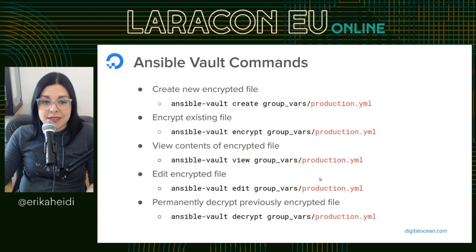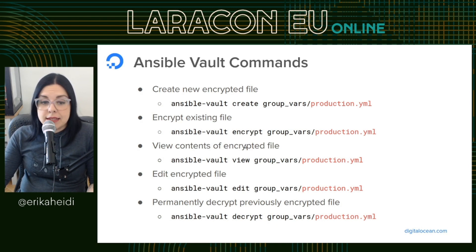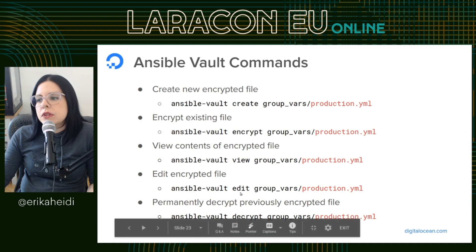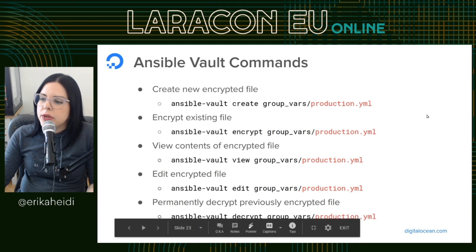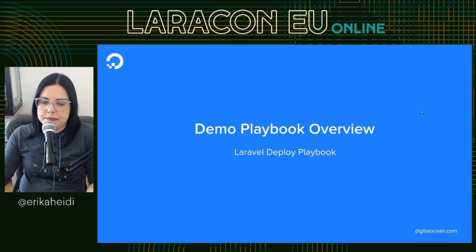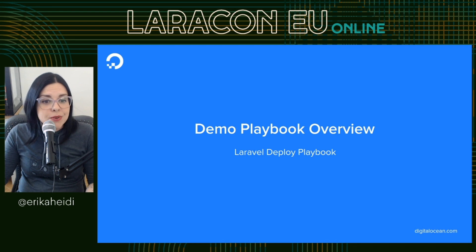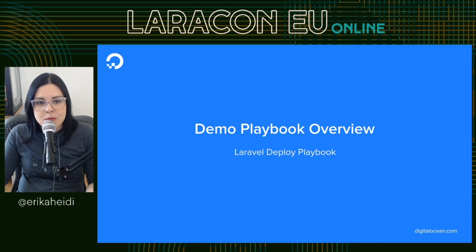The Ansible Vault commands are: `create` for creating a new encrypted file, `encrypt` for encrypting an existing file, `view` to visualize the contents of an encrypted file, `edit` to edit and change values, and `decrypt` to permanently decrypt a previously encrypted file. We've now seen how to run playbooks, how to use group variables, and how to use Ansible Vault — so we can proceed to the demo part of this talk.